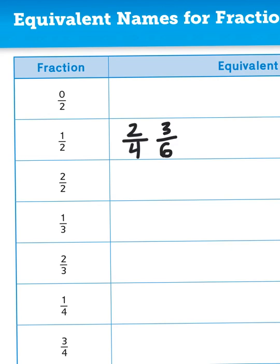Now I'm wondering if you notice a trend here: 1 over 2, 2 over 4, 3 over 6. When we are creating equivalent fractions, the way that you can easily come up with some numbers is just by skip counting. The top number, which is our numerator, is 1 in one half, and so we increase by 1 to come up with equivalent fractions: 1, 2, 3.